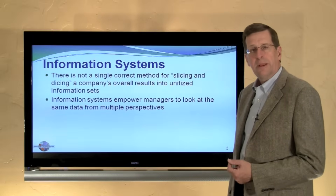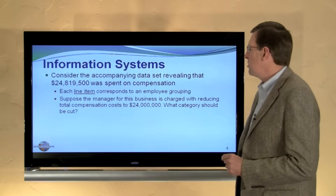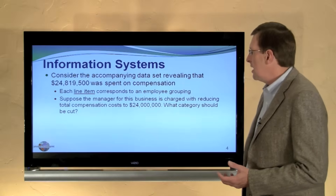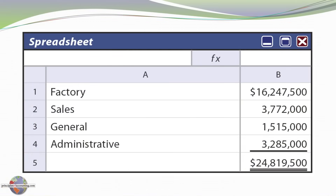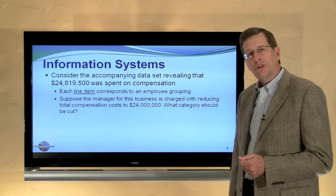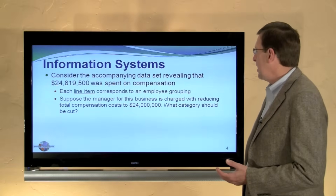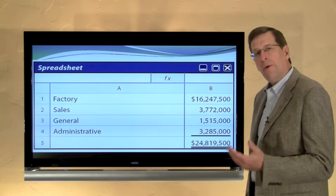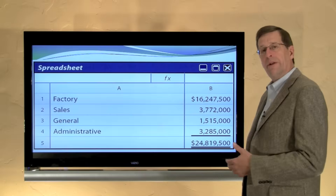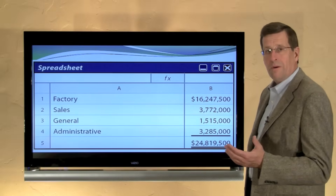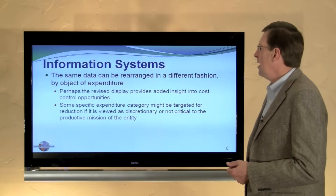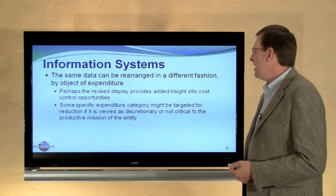It's not always static, as is typically shown in flat textbook illustrations. Consider a company data set that shows $24,819,500 was spent on compensation. Each line item corresponds to an employee grouping. Suppose the manager is challenged with reducing total compensation costs to $24 million. What are we going to cut? It's hard to know where we might go about cutting costs — do we just take $800,000 out of factory, or what approach should we use?